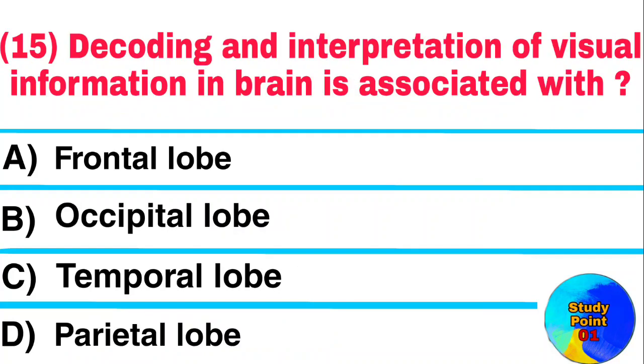Question: Decoding and interpretation of visual information in the brain is associated with? Answer: Temporal lobe.